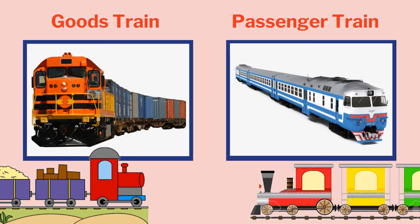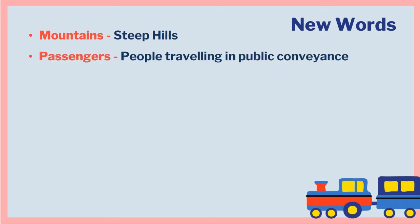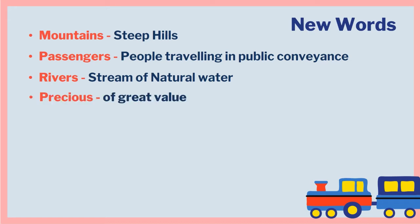Before we start to recite the poem, let's learn the meaning of some new words. First is mountains — steep hills, matlab pahar. Passengers — people travelling in public conveyance, matlab yatri. Rivers — stream of natural water, matlab nadiyan. Precious — of great value, matlab keemti. Mail — letters or parcels sent through post, matlab daak.